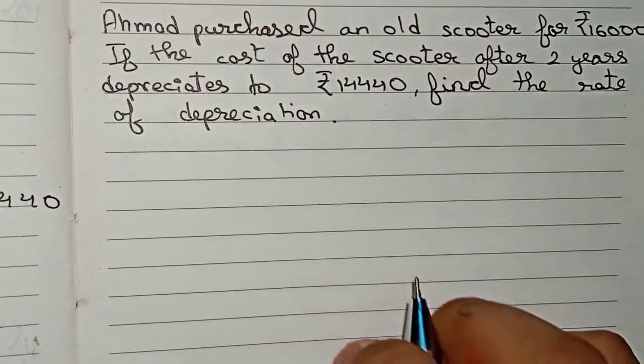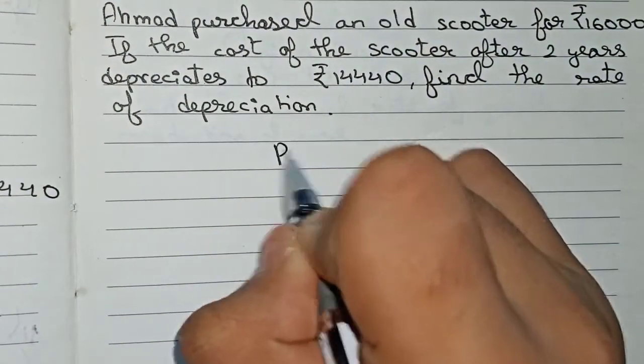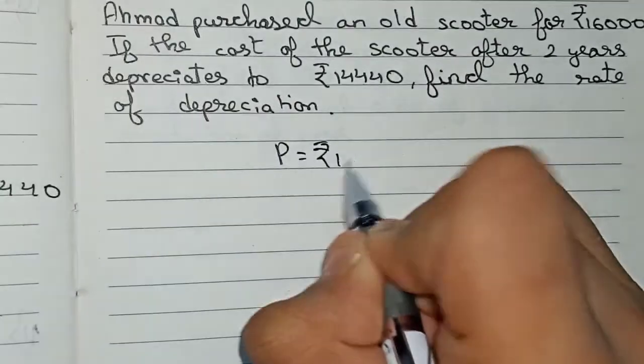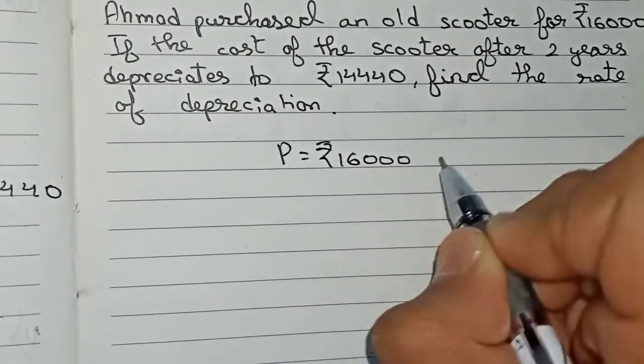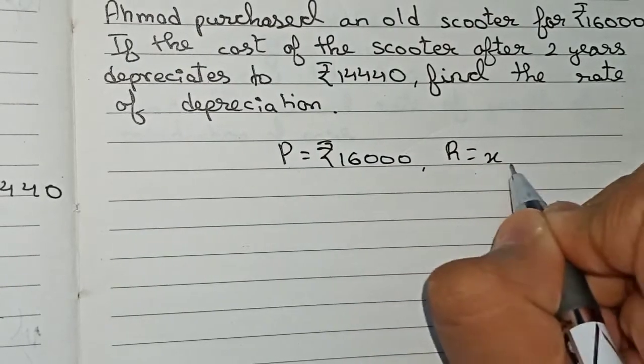This is our question. Let's solve this. So first, write all the information that has been given. First, our principal P is equal to rupees 16,000. The rate of depreciation is unknown, so take it as x.